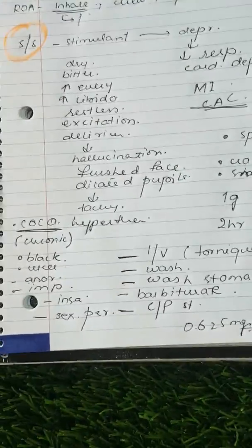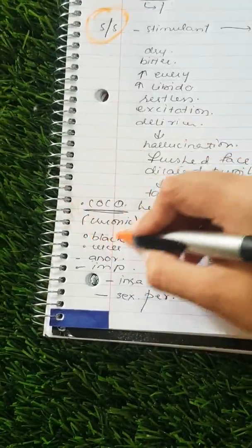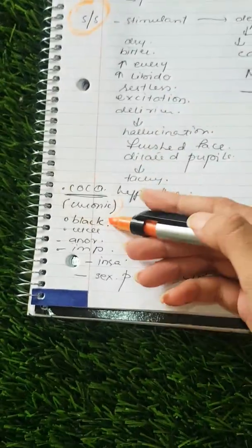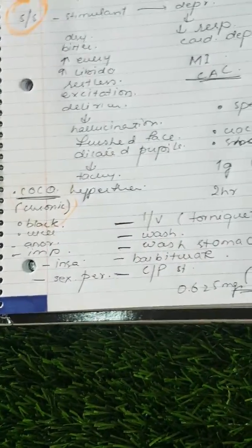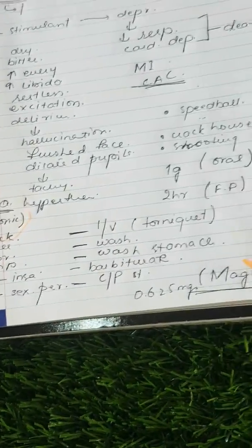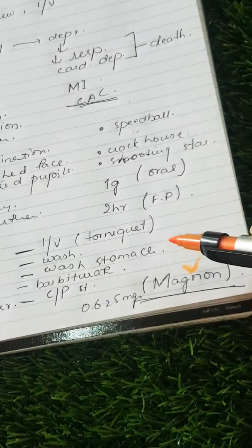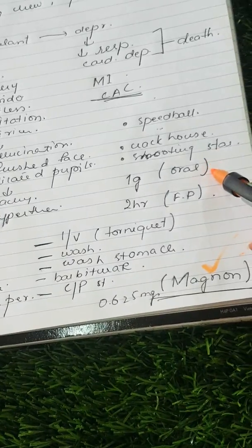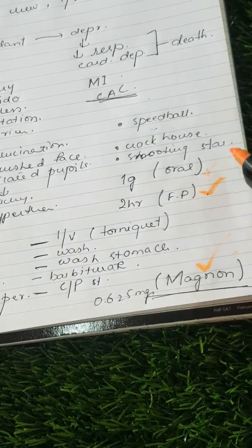This is a very important exam question. You also need to know about the chronic poisoning state, the magnet symptoms, the oral fatal dose, and the fatal period. Thank you.